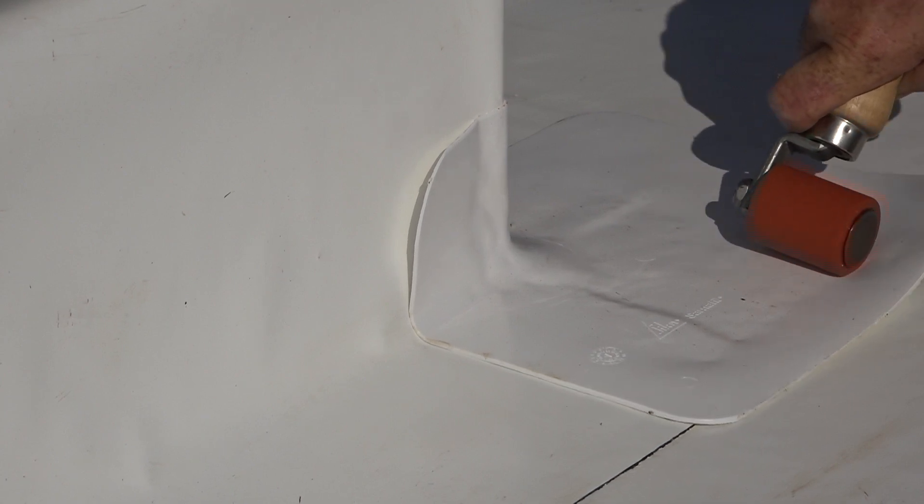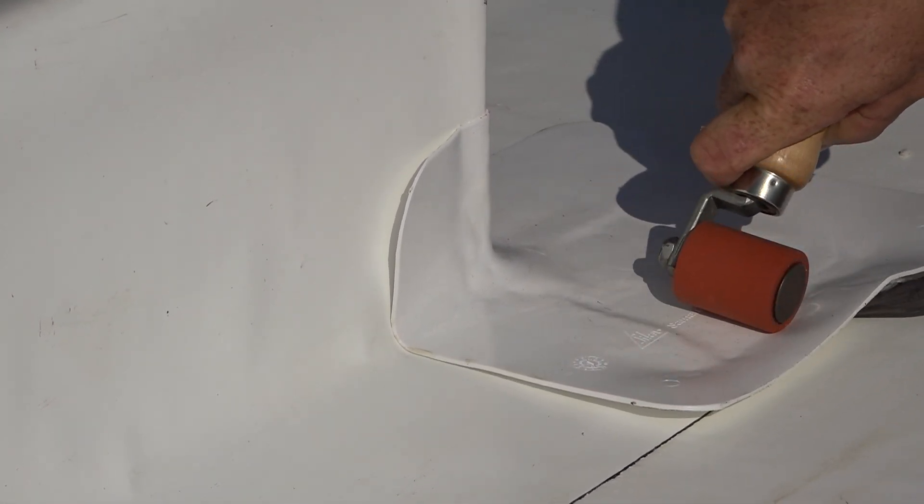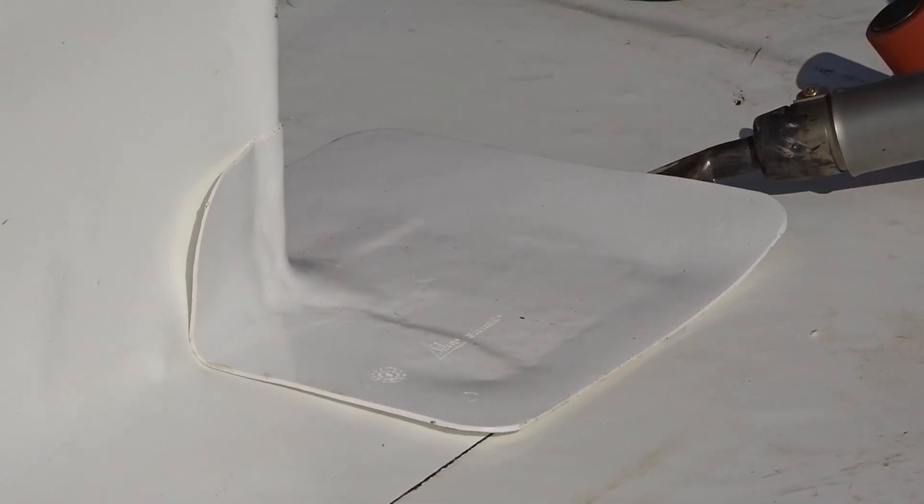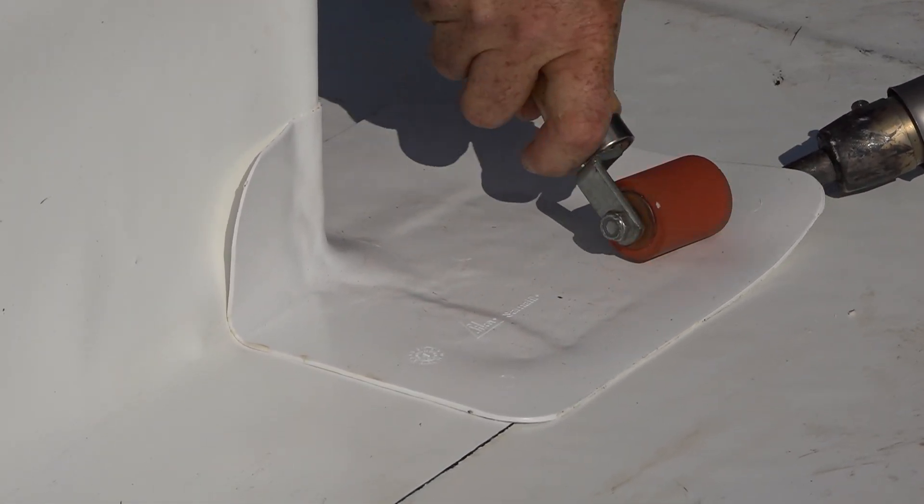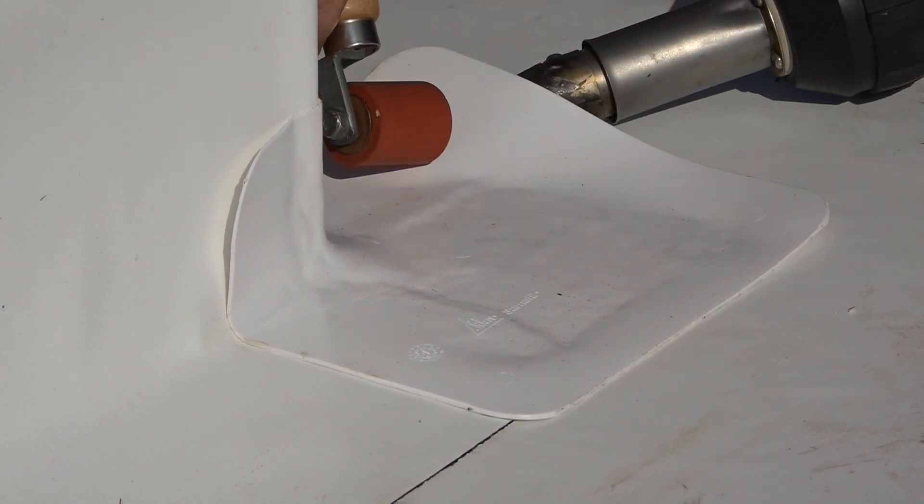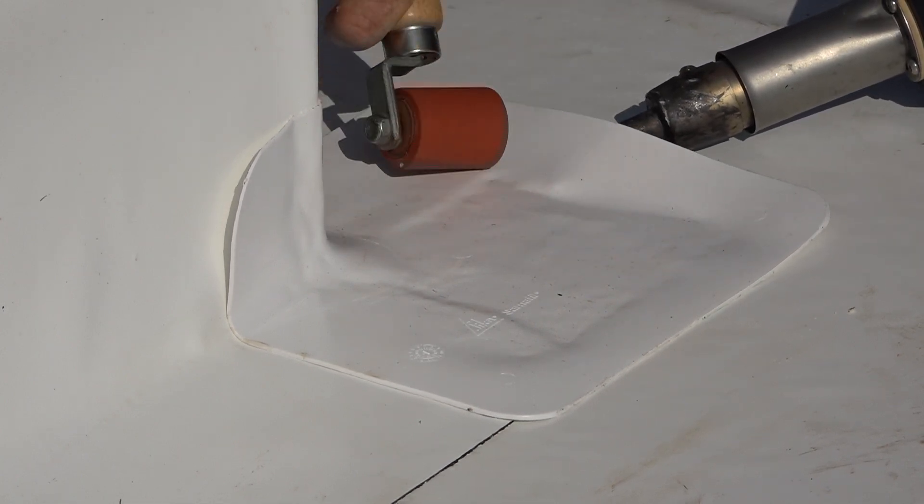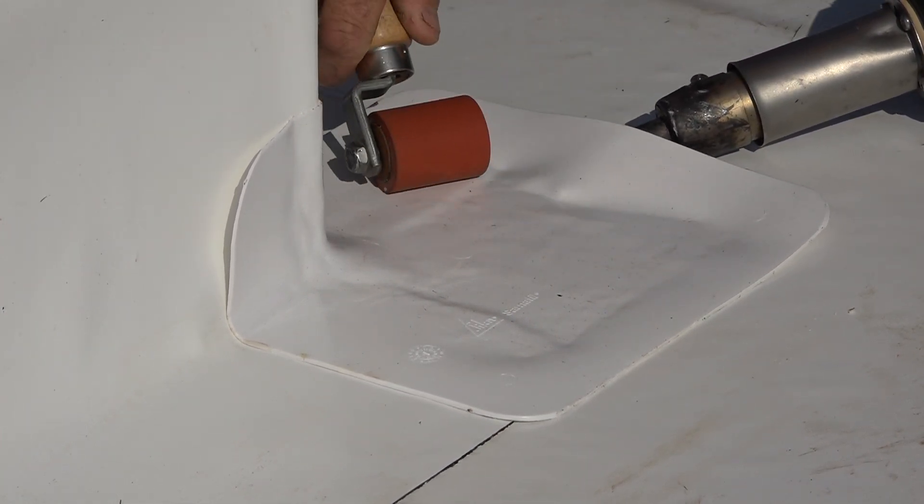And also when he gets into welding along at the joint where that overlaps onto his curb flashing, you notice how he gets that roller right in there and makes that distinct line. That gives it a good seal so there isn't a chance of any water penetrating through there.